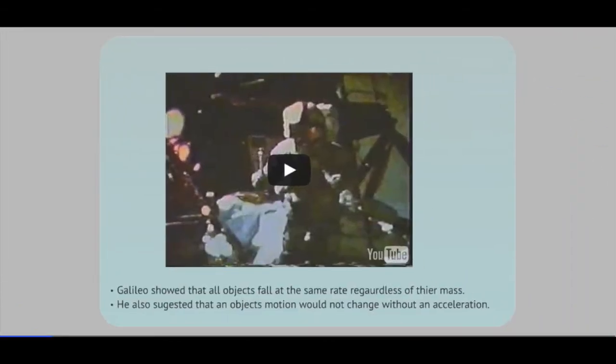Every second it falls it gains 9.8 meters per second in its velocity. Galileo was the first one to show this, that no matter what you drop, it doesn't depend what the mass is, it will fall at the same rate. He also suggested that objects in motion would not change their motion without an acceleration, which will become Newton's first law.